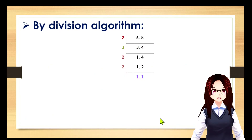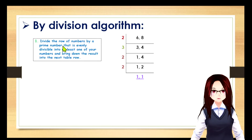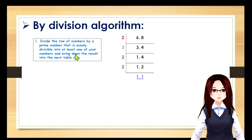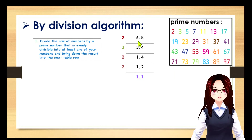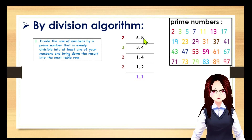Now let's try through the division algorithm. Here we divide the row of numbers by a prime number that is evenly divisible into at least one of your numbers, and bring down the next result into the next table row. Here we have our guide for prime numbers. So 6 divided by 2 equals 3, and 8 divided by 2 equals 4.